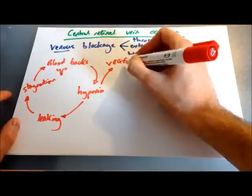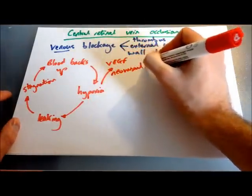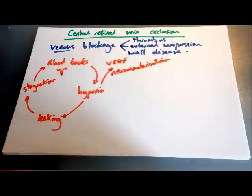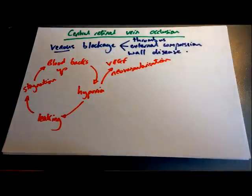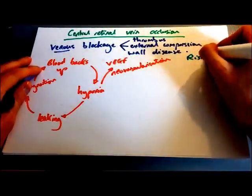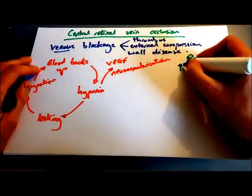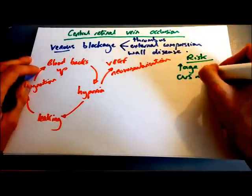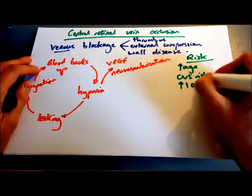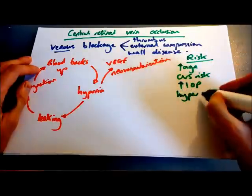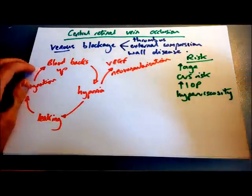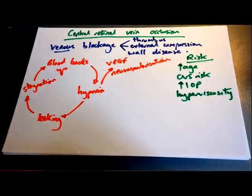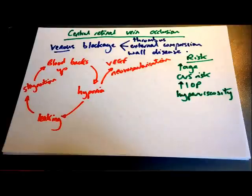If hypoxia is present, it causes the release of VEGF — vascular endothelial growth factor — similar to in diabetic retinopathy, and this causes neovascularisation of the retina. Moving on to risk factors, these are quite similar to central retinal artery occlusion: increasing age, cardiovascular risk factors such as hypertension, hyperlipidaemia, diabetes, smoking and obesity, raised intraocular pressure which can cause external compression of the veins, hyperviscosity syndromes such as in myeloma, and thrombophilia.